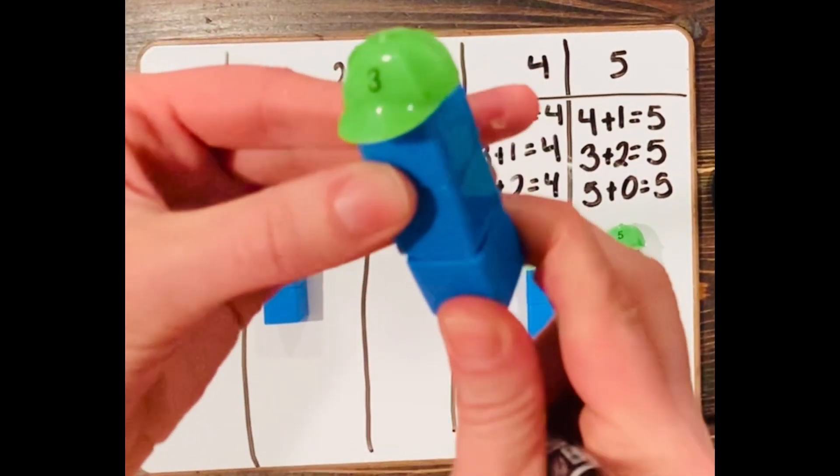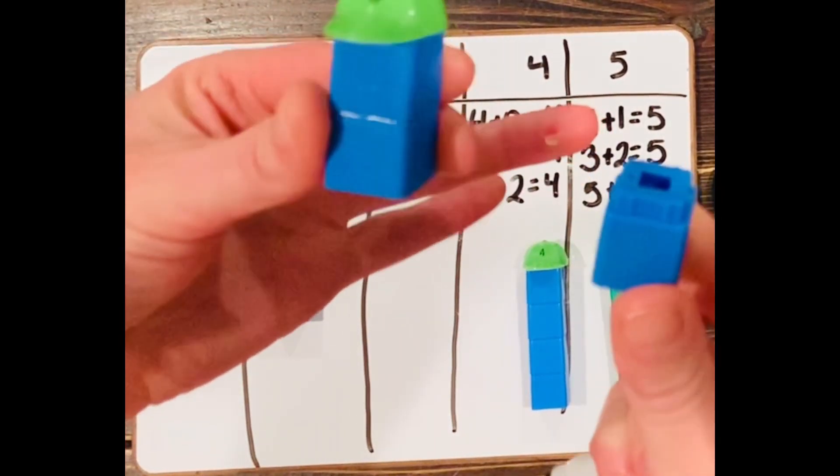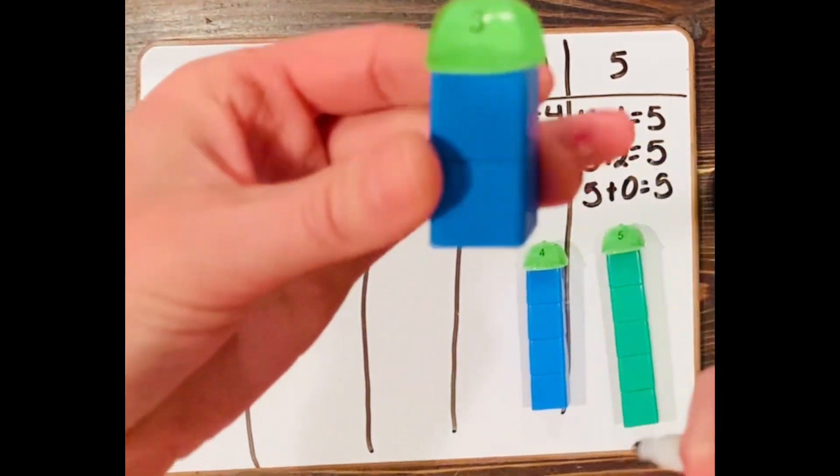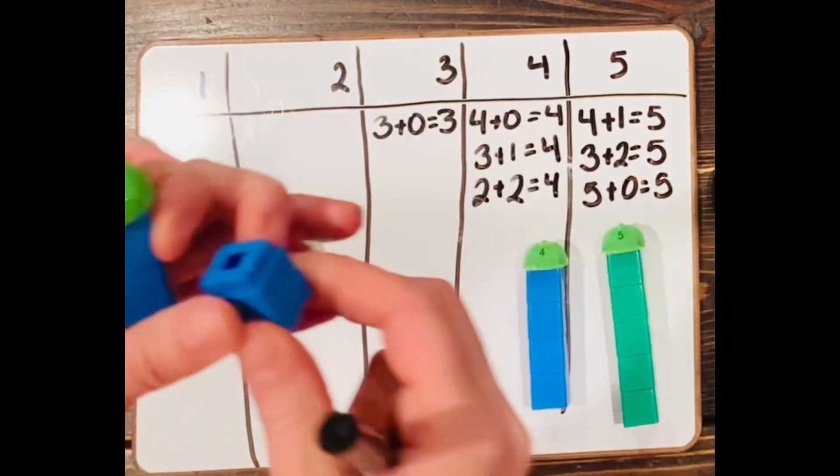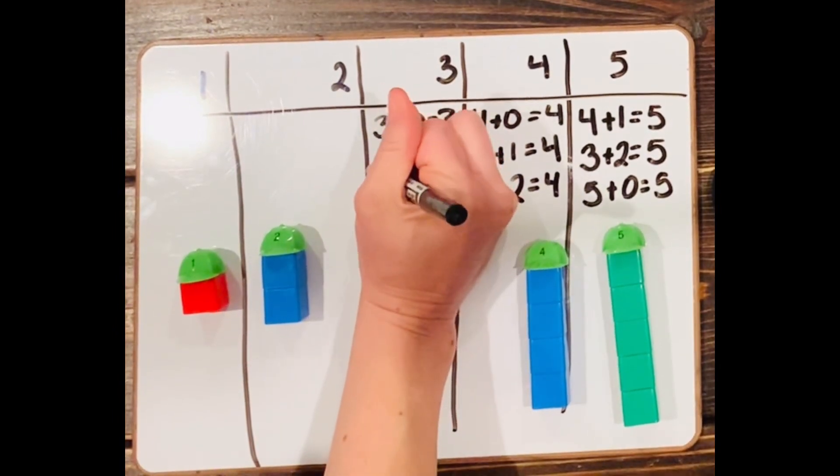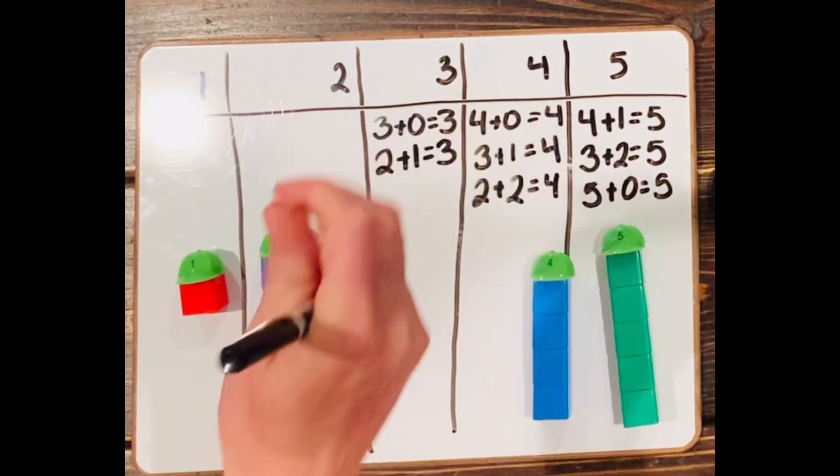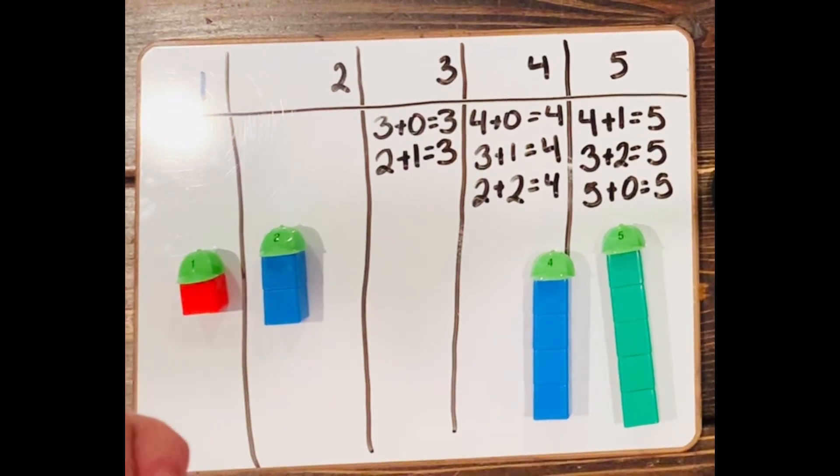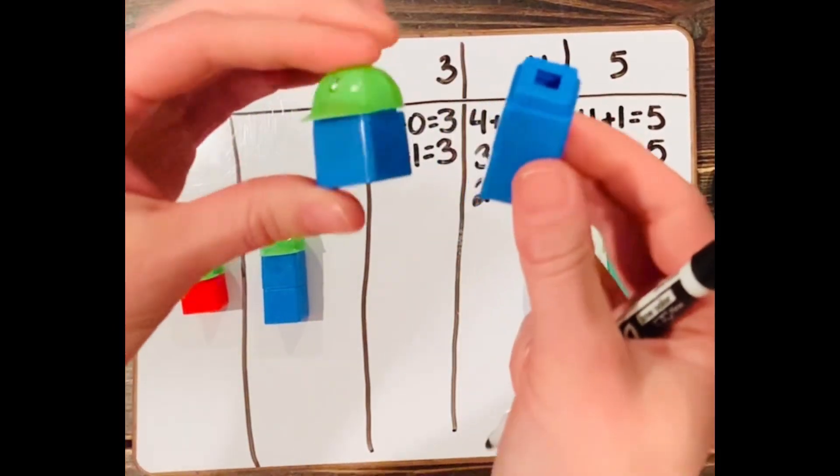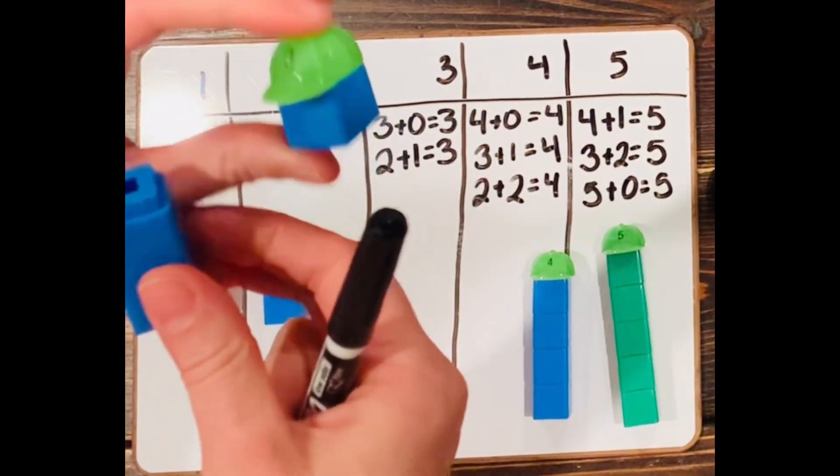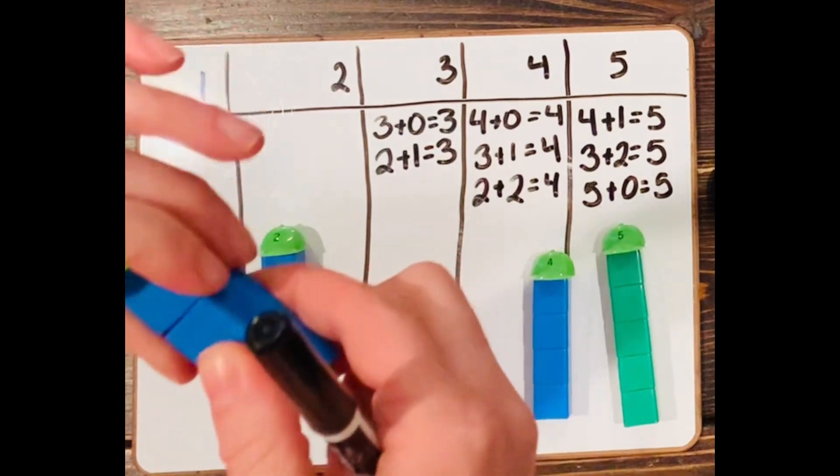Now what if I break off one? What two numbers do I have that can make three? I have one, two, and I have one. So two and one equals three. Okay, and then if I break off two, it's the same. Whoopsie, lost my hat. It's the same thing. It's just mixed up, right? Two and one is the same as one and two. They both equal three.